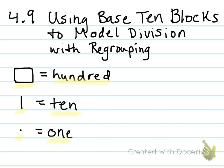Let's do some model problems. We're going to be using Base 10 Blocks, and it's going to be very similar to 4.2, where we use our divisor and make that amount of circles to divide into. But instead of using counters today, we're going to use our symbols to represent the numbers.